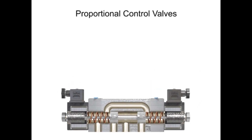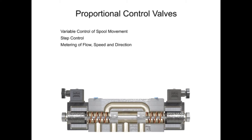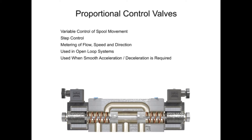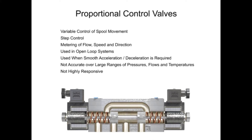Proportional control valves allow for variable control of spool movement, which allows more step control and metering of flow, speed, and direction. Most valves of this design are used in open-loop systems to smoothly accelerate and/or decelerate an actuator or cylinder. The proportional control valve allows for a simpler hydraulic circuit, but it is not accurate over a broad range of pressures, flows, and temperatures. Neither are they highly responsive. Proportional valves offer a variety of machine cycles, which can safely be operated at greater speeds, resulting in improved machine cycle times and production rates.